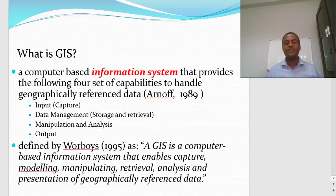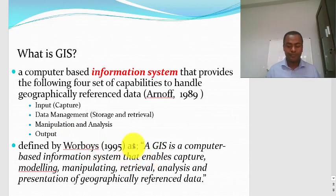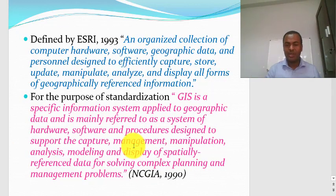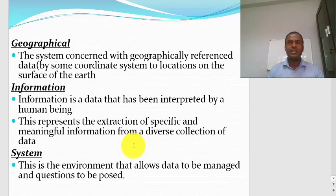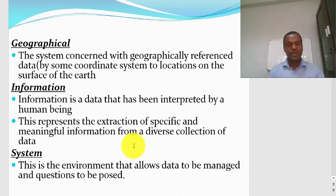There are many definitions of GIS given by many authors — one of them is Worboys. Another way of looking at GIS is by splitting the words: geographical, information, and system, and examining each word separately.